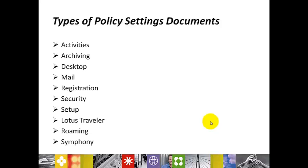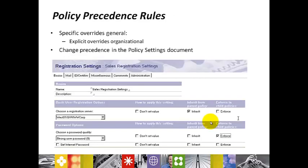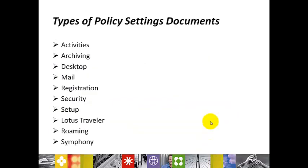The setting document types are: Activities, Archiving, Desktop, Mail, Registration, Security, Setup, Lotus Traveler, Roaming, and Symphony. Policies can be either organizational or explicit. Organizational means it is applied to an organization or organizational unit. Explicit means it applies to a specific user and may include users from different OUs.